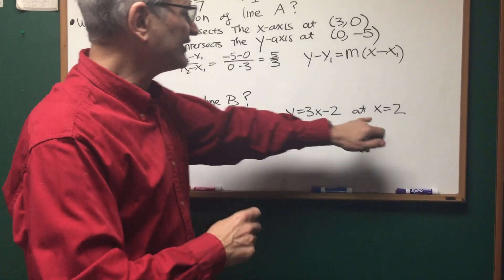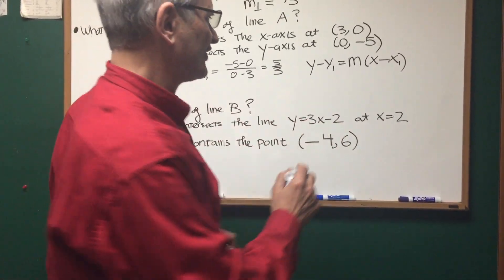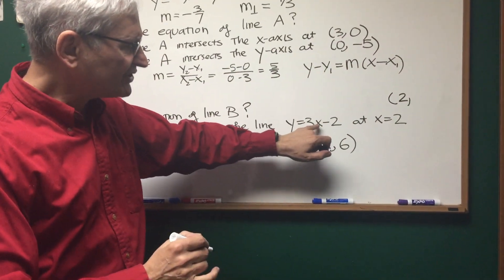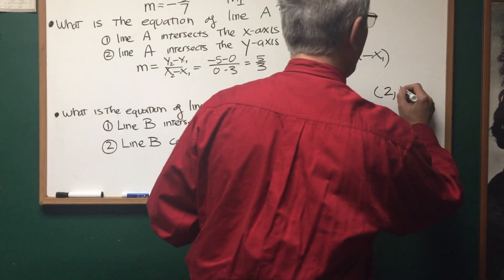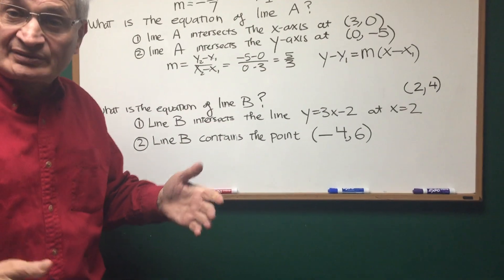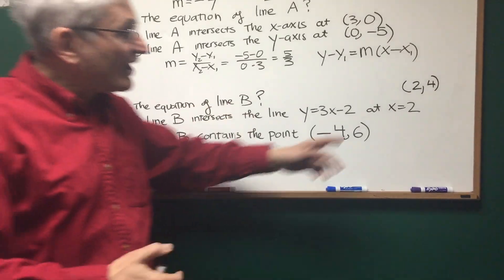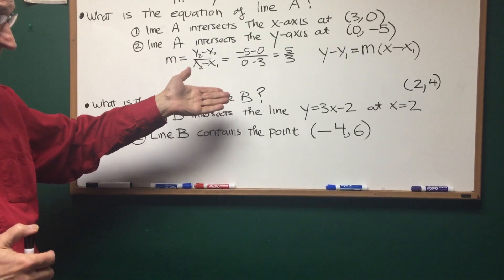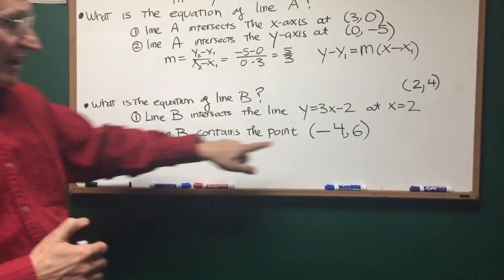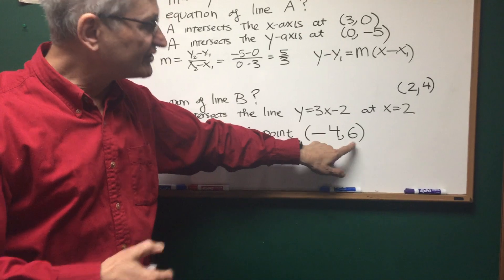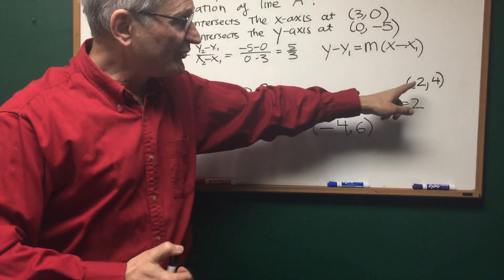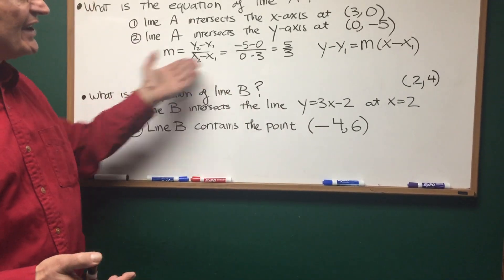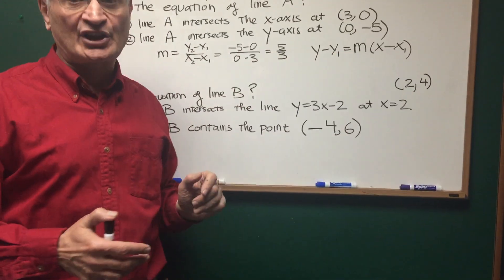But what happens if I take statement 1? If I plug in x equals 2 into this equation here, I will get when x equals 2, 3 times 2 is 6, 6 minus 2 is 4, I get the point (2,4). Statement 1 is pretty much telling us that (2,4) lies on line B. Statement 2 tells us that (-4,6) is also contained in line B. Just like in the previous problem, we have two points lying on a line.